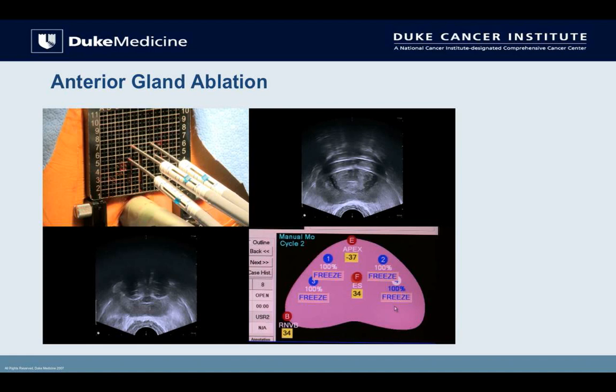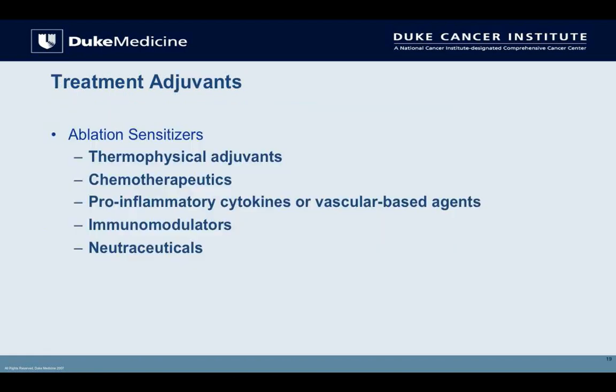One new treatment option going forward is anterior ablation. Due to MRI's ability to see anterior lesions, we now have this approach. This shows four cryotherapy probes placed through a grid — you can see placement on ultrasound, and the schematic shows our ice edges. We're ablating the entire top anterior part, and nowhere does the ice come anywhere near the neurovascular bundle. This is an ideal form of focal therapy going forward, enabled by multiparametric MRI.